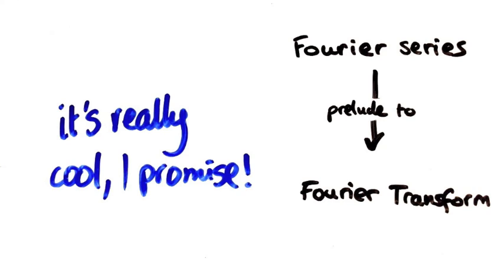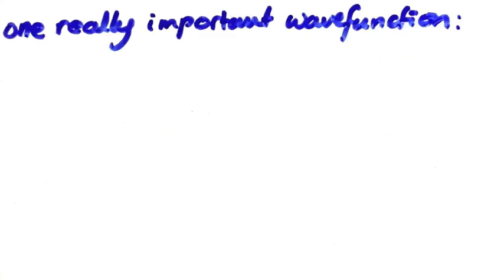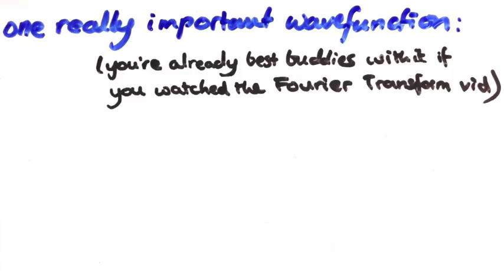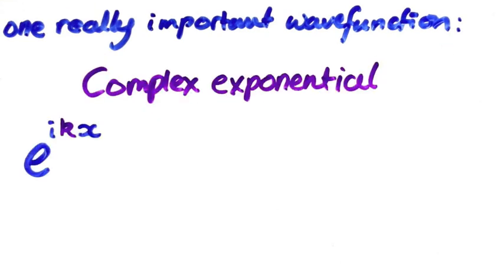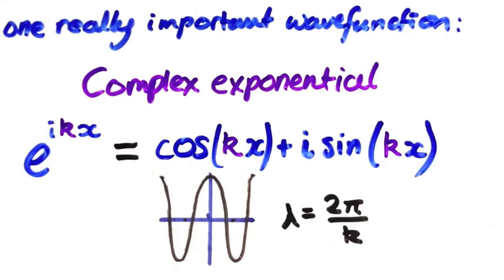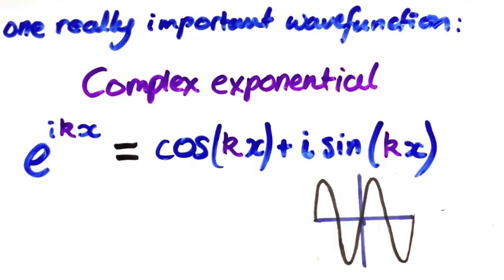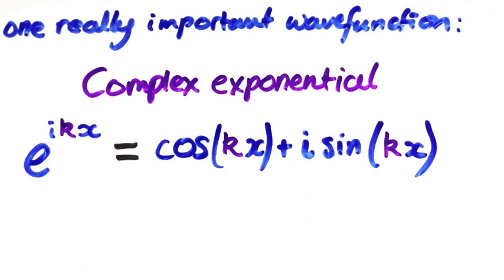I'm going to assume that we're all on the same page now. Today's discussion is going to centre around one really important position wave function. If you've watched my last video, then you'll already be well acquainted with it. It is the complex exponential — the function whose real part is a cosine wave of wavelength 2π/k and its imaginary part is a sine wave with the same wavelength.